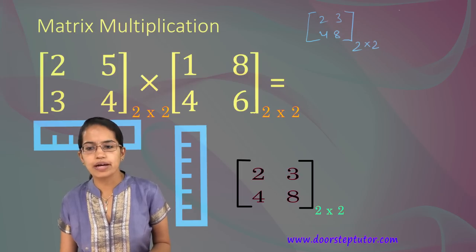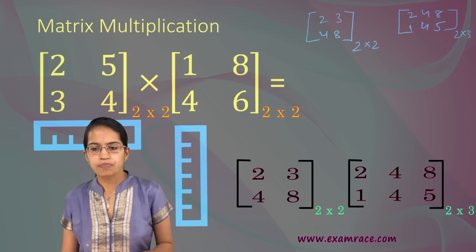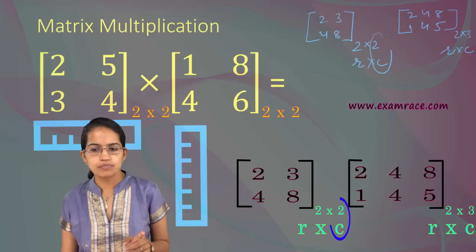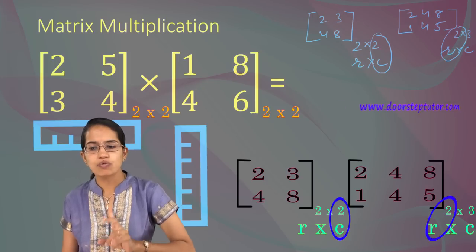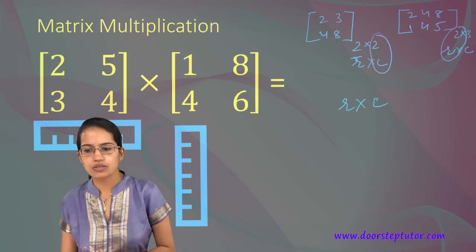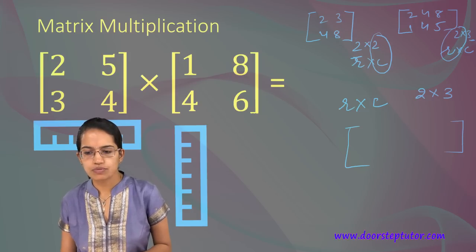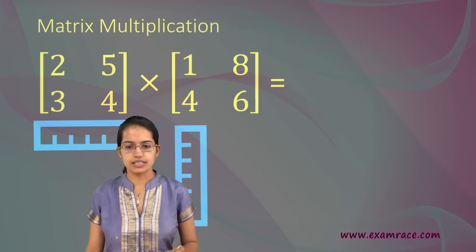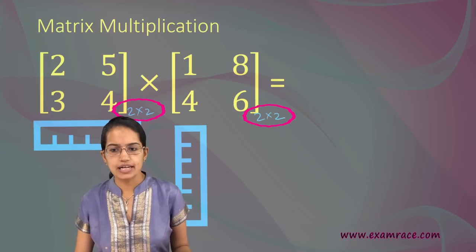A simple example: we have a 2×2 matrix and a 2×3 matrix with values 2, 3, 4, 8 and 2, 4, 8, 1, 4, 5. The columns of the first matrix equal the rows of the second, so multiplication is valid. The resultant matrix will have the remaining rows and columns — a 2×3 matrix.